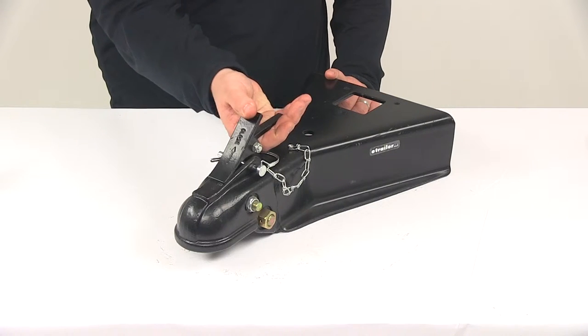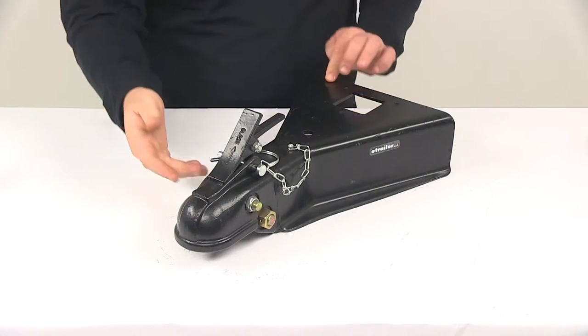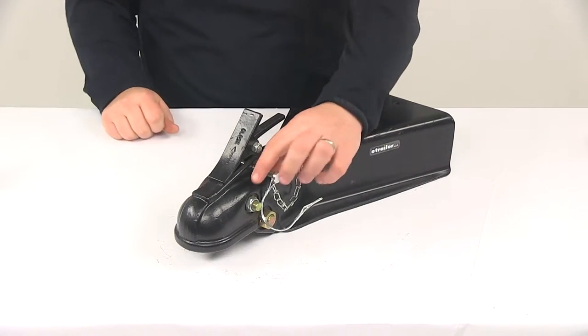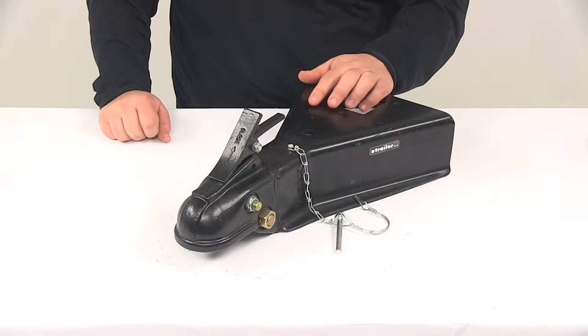It's got the squeeze latch mechanism that's going to allow for safe and easy coupling and uncoupling. In order to connect to your hitch ball, you want to remove the safety pin that it comes with. It's going to be connected with a nice little safety chain so you don't have to worry about misplacing that or losing that.